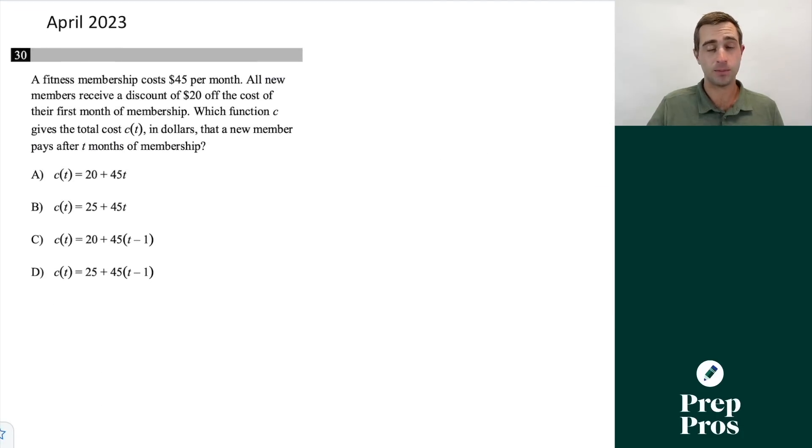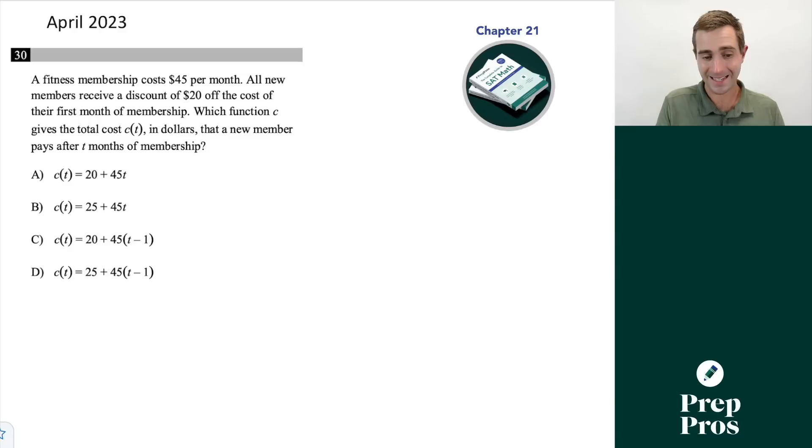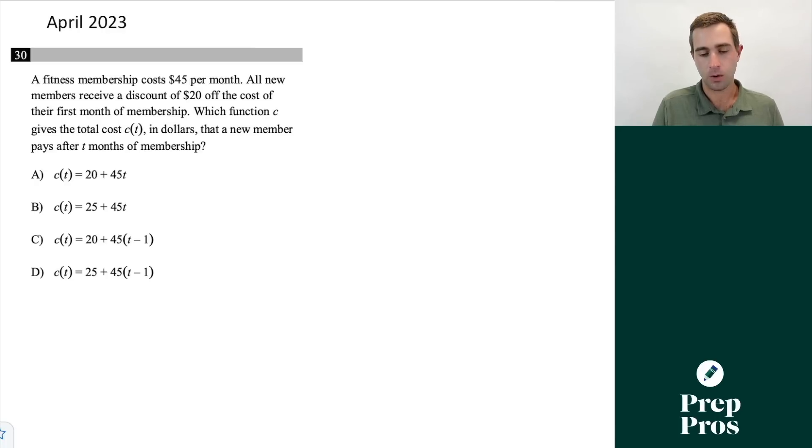Next up here, this has been a concept that's really started to show up even more so on the digital SAT than the paper-based SAT. We're looking at some of these kind of tricky linear equation questions. Here we see a fitness membership costs $45 per month. All new members receive a discount of $20 off the cost of the first month of membership. Which function C gives the total cost C(t) in dollars that a new member pays after t months of membership? This is question 30 from the calculator section, so this immediately gives me a red flag. This is a tricky question. So I always want to try to plug in values when I can. We know it's $45 per month, but we get a $20 discount off the first month. So that would tell me my first month is going to be $25.